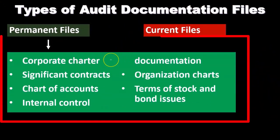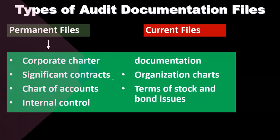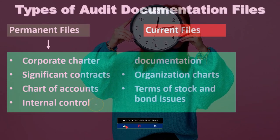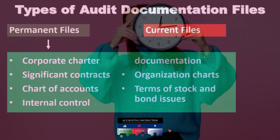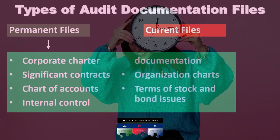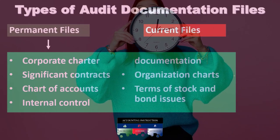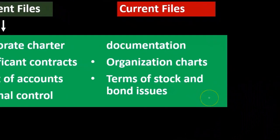Permanent file types of activities include the corporate charter — obviously that's not going to change all the time. Significant contracts, especially long-term contracts, go in the permanent file. Possibly the chart of accounts, internal controls — which can be set up and established for a long period of time — organizational charts, which typically reflect upper management, and the terms of stock and bonds issued.